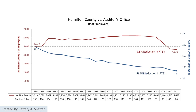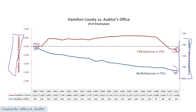We can also put that chart into a dual-axis chart, which is even easier to compare. Both charts start at 100%. However, they are using different axes — for the County they use the left Y-axis, and for the Auditor's Office they use the right Y-axis.